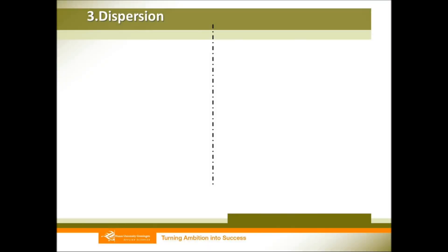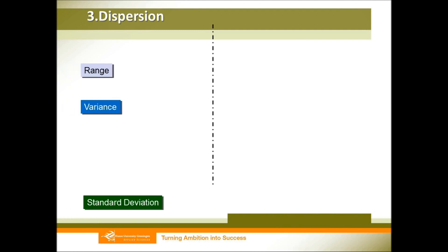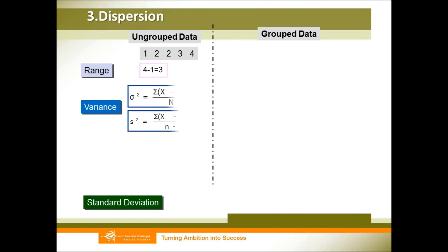Now that you know how to calculate central tendency — mean, median, and mode — we will learn how to calculate dispersion. For dispersion, we normally talk about three things: range, variance, and standard deviation. We also distinguish ungrouped and grouped data. For ungrouped data, range is the highest number minus the lowest number. Variance tells you how spread your data is. We need to distinguish whether the data comes from a population or a sample. If from a population, variance is sigma squared; if from a sample, variance is s squared. For a sample, divide by n minus 1, rather than by n.